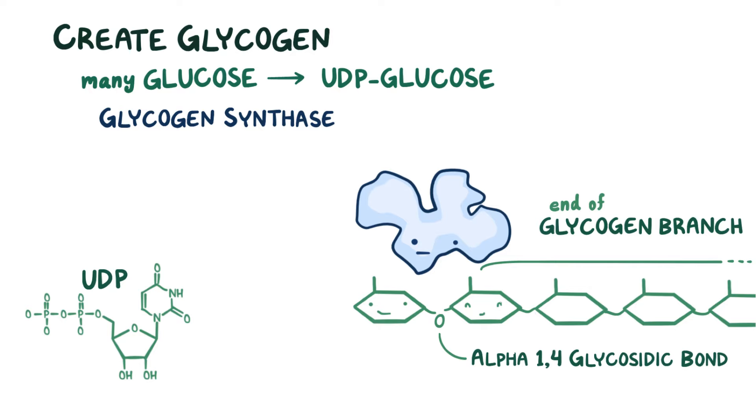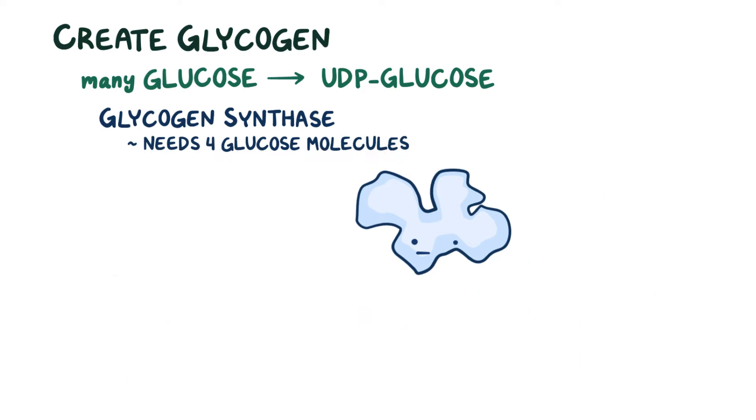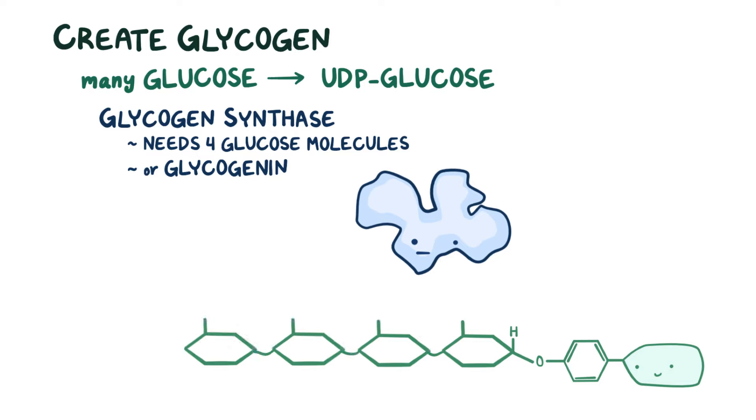But it turns out that glycogen synthase can only elongate an already existing glycogen chain that's at least four glucose molecules long. So if there aren't at least four glucose molecules linked up together already, then glycogen synthesis requires a protein called glycogenin. Glycogenin plays the role of fooling glycogen synthase by catalyzing the attachment of four glucoses to itself, creating a short chain connected with alpha-1,4 glycosidic bonds.